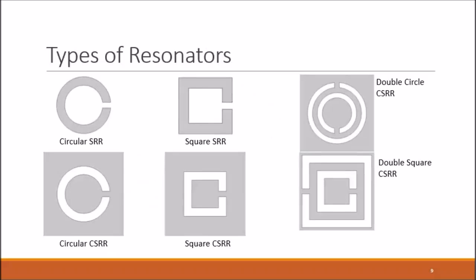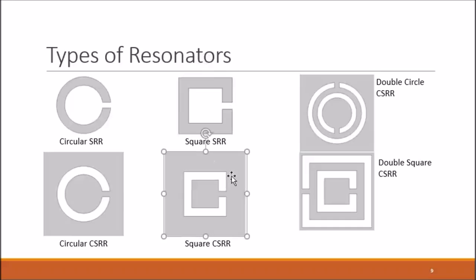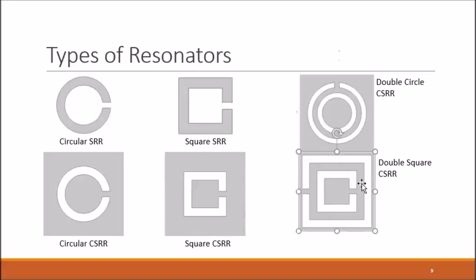The types of resonators can be seen below: a circular split ring resonator with its complement below, a square split ring resonator with its complement below, and finally a double circle and double square complementary split ring resonator.